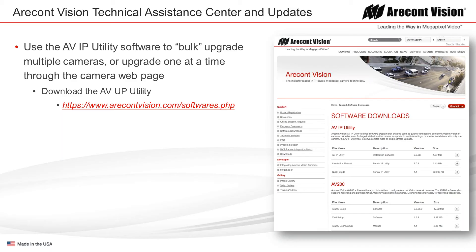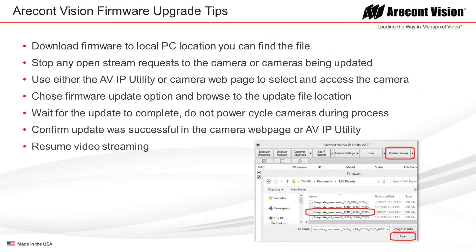For firmware updates you really don't need the Technical Assistance Center — it's a straightforward process. Here are a few tips: if everything works and you're happy with your system, there's no need to do a firmware update. If you want to add a new feature like SnapStream, or there is a known improvement, fix, or compatibility need for a given firmware version, then you'd have reason to do the upgrade. Go find the firmware on the website, or if a hardware file is needed, contact the TAC to get both files together.